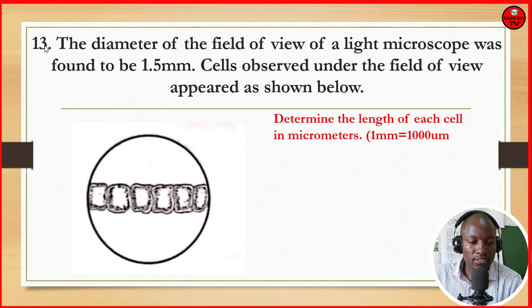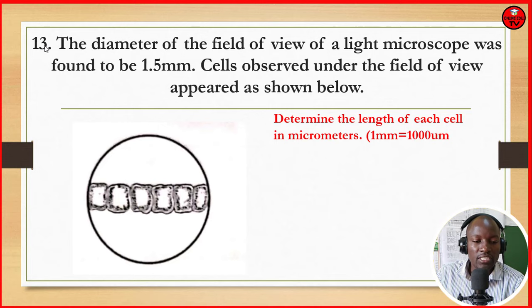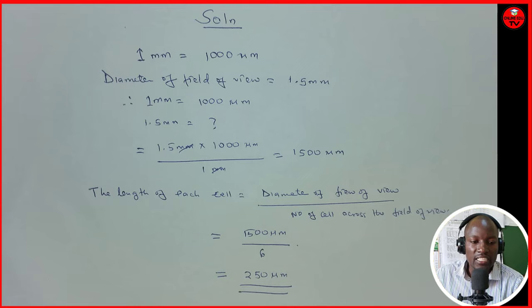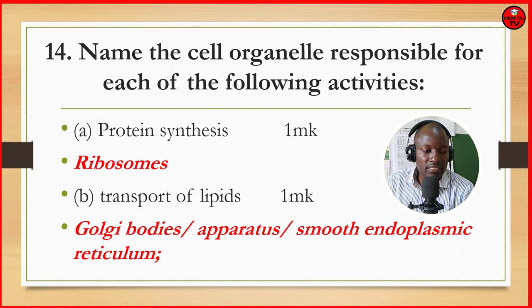The diameter of the field of view of a light microscope was found to be 1.5 mm. Cells observed under the field of view appeared as shown. Determine the length of each cell in micrometers, given that 1 mm is equivalent to 1,000 micrometers. This is how you compute to determine the length of each cell in micrometers. Name the cell organelle responsible for: protein synthesis — ribosomes; transport of lipids — Golgi bodies, also called the Golgi apparatus, and also the smooth endoplasmic reticulum.